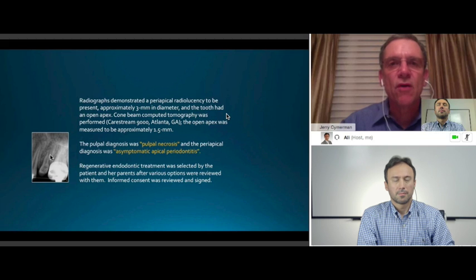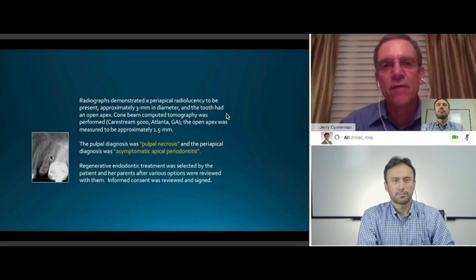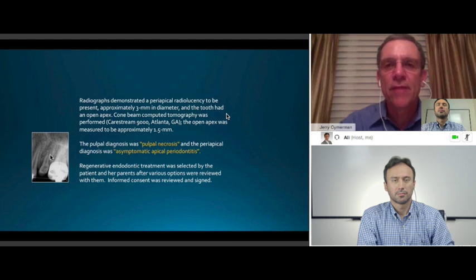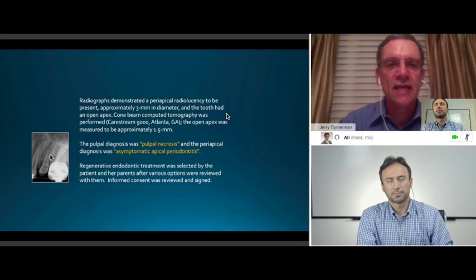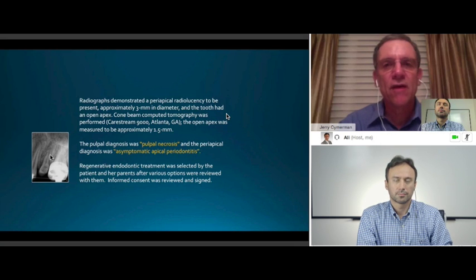We also did some cone beam computed tomography to analyze the size of the open apex. We found that the apex was actually 1.5 millimeters in diameter, which would be equivalent to a file that's 150. That's a pretty open apex tooth. Our pulpal diagnosis was pulpal necrosis and the periapical diagnosis was asymptomatic apical periodontitis. We gave the patient's parents and the patient several options. One was to do apexification using bioceramic material at the apex and backfilling with gutta-percha, or the other option was to try to do a regenerative endodontic treatment. The parents decided they wanted to try a regenerative endodontic therapy to try to get the apex to close and to get root lengthening and a stronger tooth.